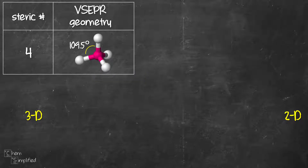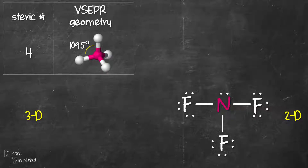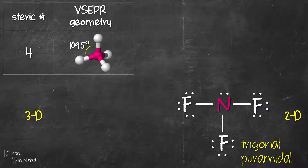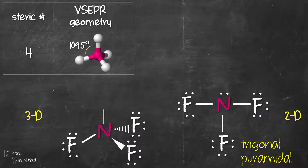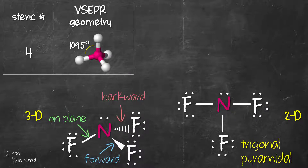Staying at steric number 4, let's look at NF3. In this Lewis structure, you can see it has steric number 4 due to four groups: three single bonds and one lone pair. Since we have a lone pair on the central atom, the shape is no longer tetrahedral — instead it's trigonal pyramidal. To draw NF3 in 3D, we start with nitrogen in the center and draw four lines at 109.5 degrees from each other just like in tetrahedral. We place the three fluorines, remove the extra bond, and add in the lone pair. Molecules with trigonal pyramidal geometry will have one bond on the plane, one bond sticking out of the plane, and one bond pointing to the back of the plane.